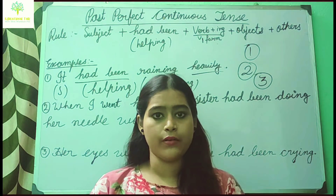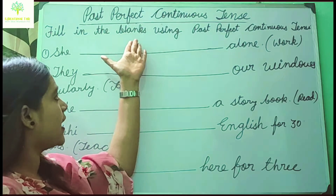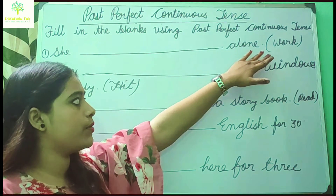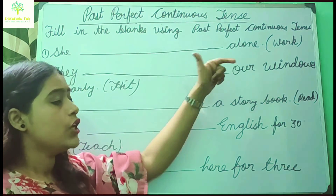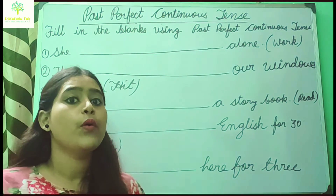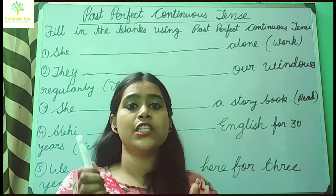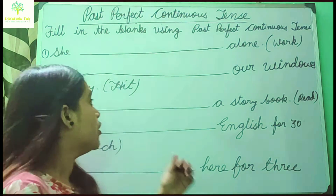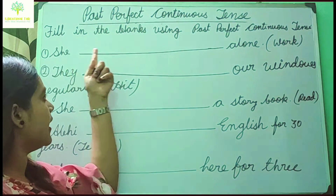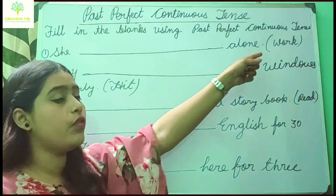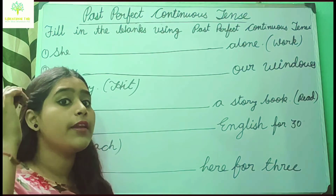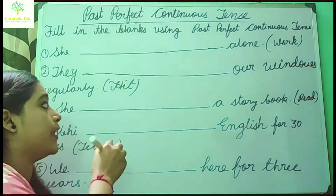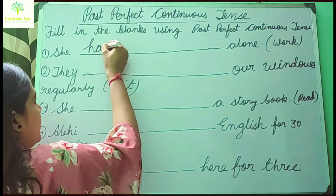Now I am giving you more examples to clarify your doubts — fill in the blanks using past perfect continuous tense. First one: 'She ___ alone.' Remember the rule: subject + had been + V1+ing. So the answer is: 'She had been working alone.'